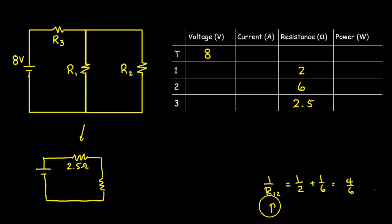Now to find R12, I'm going to have to take the reverse of that, which is 6 over 4, which is 1.5 ohms. So the equivalent resistance for R1 and R2 is 1.5 ohms. Then I'm going to combine these two resistors. These two are in series now, so I'm just going to add them. And 2.5 plus 1.5 is 4, so 4 ohms.